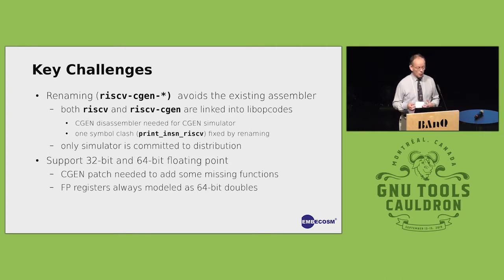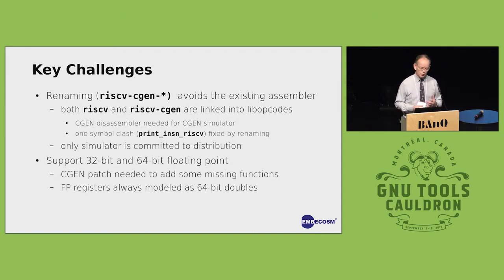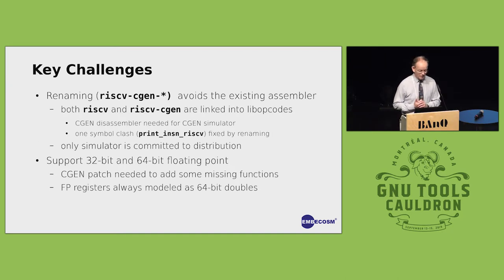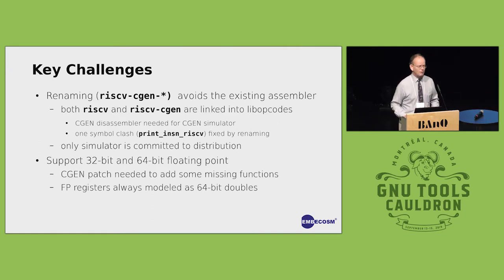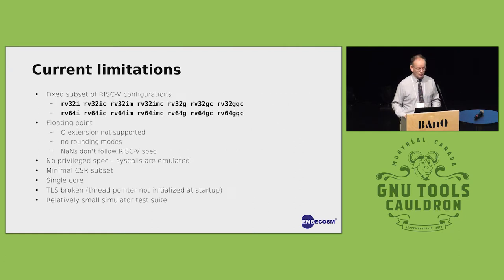The other challenge was supporting both 32-bit and 64-bit floating point together in one architecture. There are some missing functions in CGen for that — apparently it's never been done in a CGen architecture before. We've got some patches for CGen which we'll be sending to Frank very shortly. We've modelled the floating point registers as 64-bit doubles, which doesn't really work for 32-bit floating point — we get the rounding wrong.